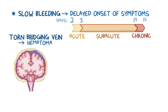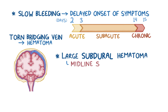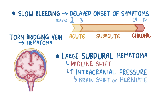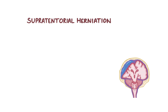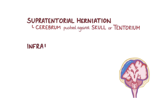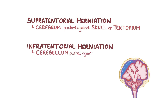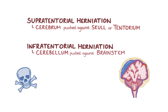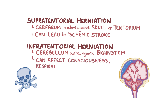The hematoma can compress the brain and cause increased intracranial pressure. A large subdural hematoma on one side of the skull can cause a midline shift, which is a displacement of the whole brain towards the opposite side of the skull. The increased intracranial pressure can also cause the brain to herniate. There can be a supratentorial herniation, where the cerebrum is pushed against the skull or the tentorium, as well as an infratentorial herniation, where the cerebellum is pushed against the brain stem. Both of these can be lethal. Supratentorial herniations can compress the arteries that nourish the brain, which can lead to an ischemic stroke, and infratentorial herniations can compress the vital area in the brain stem that controls consciousness, respiration, and heart rate.